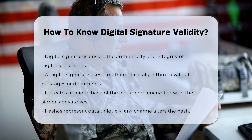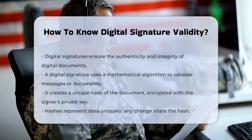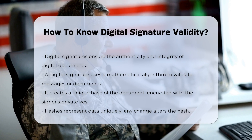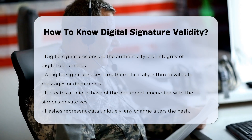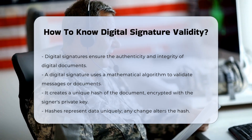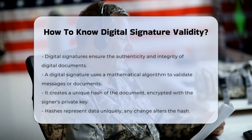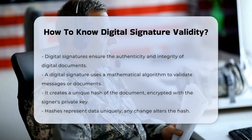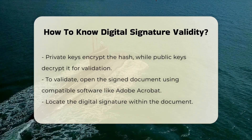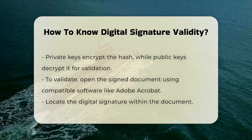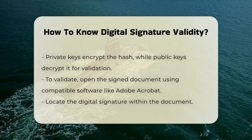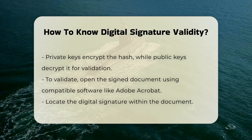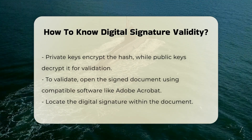Key Components of Validation. To validate a digital signature, several key components are involved. A hash is a fixed-length number that uniquely represents the data — if any part of the data changes, the hash will also change. The signer's private key is used to encrypt the hash, and the public key is used to decrypt it. If the decrypted hash matches the original one, the signature is valid.